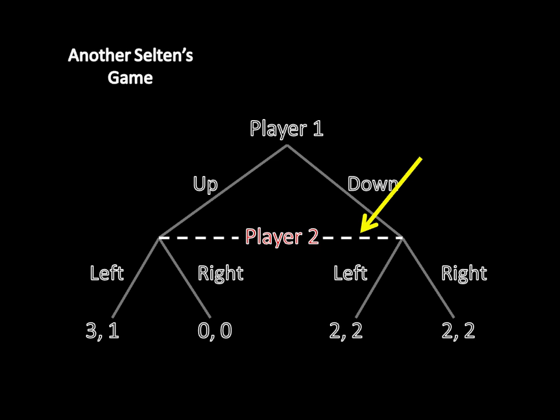We'll later use this dashed line for games of incomplete information. But we can also use it for simultaneous move games like the prisoner's dilemma, the stag hunt, or matching pennies, or in this case, another form of Selten's game.